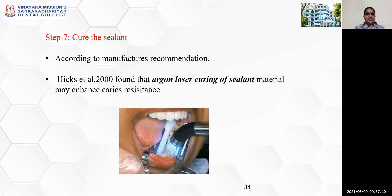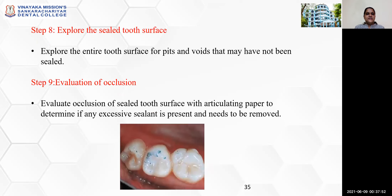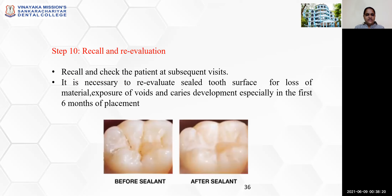Step 7 is curing of the sealant according to the manufacturer's recommendation. Hicks et al. in 2000 found that argon laser curing of sealant material may enhance caries resistance. Step 8 is to explore the sealed tooth surface for pits and voids that may not have been sealed. Step 9 is evaluation of occlusion with articulating paper to determine if any excessive sealant needs to be removed. Step 10 is recall and evaluation — it is necessary to re-evaluate the sealed tooth surface for loss of material, exposure of voids, and caries development, especially in the first 6 months of placement.